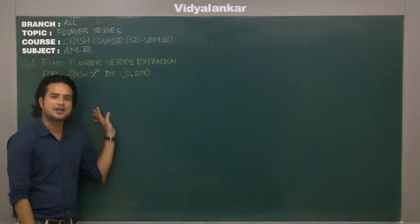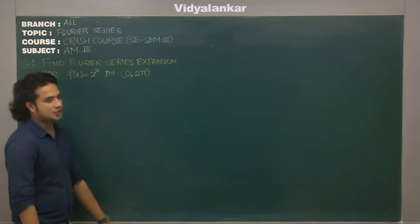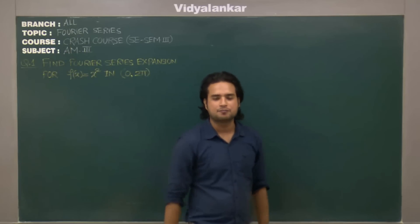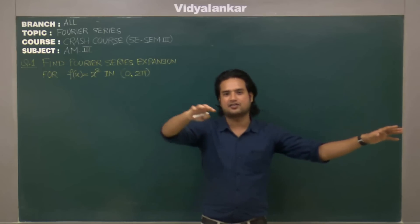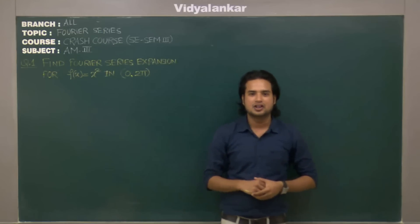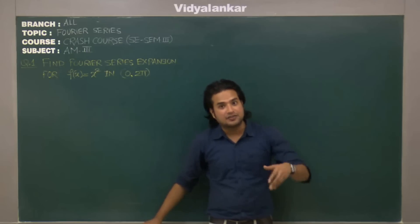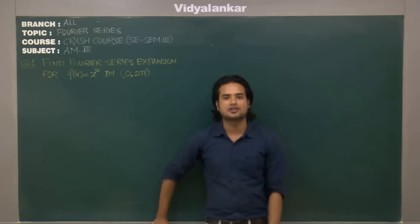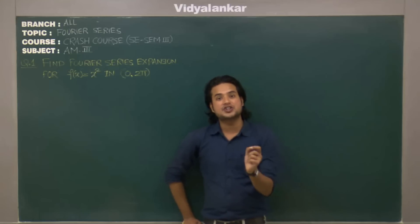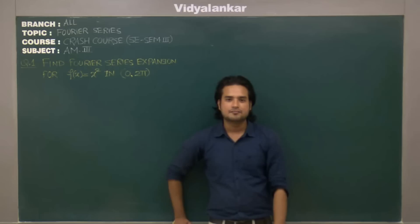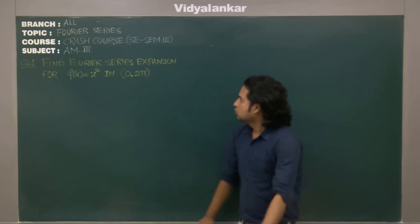Let me start with Applied Mathematics 3, Fourier series topic. Now Fourier series, as you all are aware, is basically divided into two parts. One is what we call Trigonometric Fourier series and then the other one we have is Complex form of Fourier series. In Trigonometric Fourier series again we have several types: full range Fourier series and then half range Fourier series.